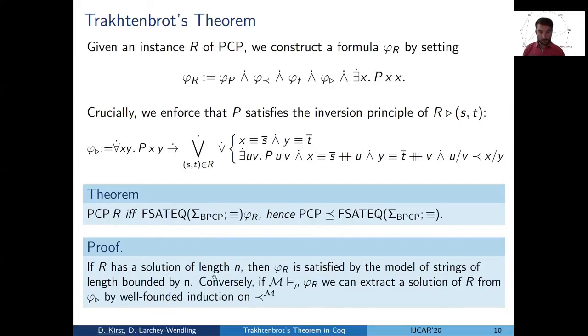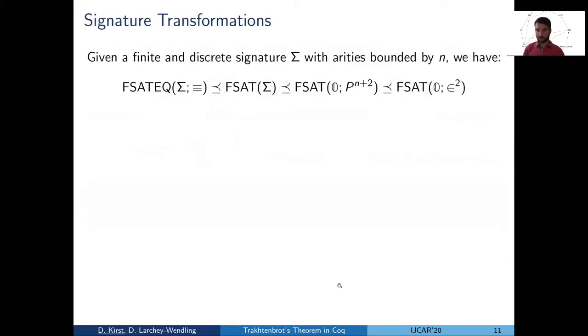A bit more interestingly is the direction from right to left. If we are in some finite model satisfying phi R, then we extract a solution from it. The idea is that we just iterate the inversion principle until we have the full solution at hand. And iteration means well-founded induction on the ordering. And why is that possible? Because the type is finite, so the ordering is well-founded.